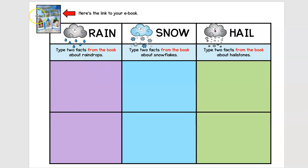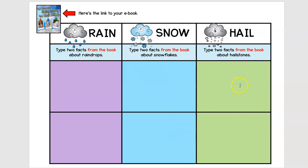It's got to be something that you learned from the book, not just something you made up out of your head or that you've known since you were little. One fact, two facts. Then you're going to do the same thing with snowflakes — two facts from the book, one and two. And then two facts about hailstones. Again, information that you learned from the book goes right there.